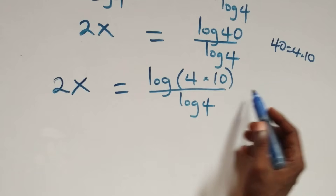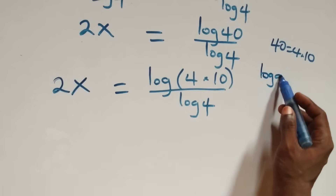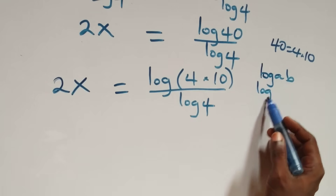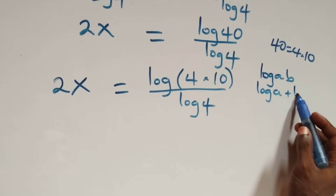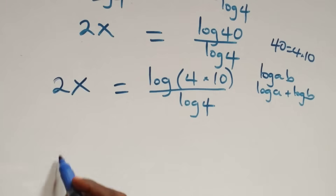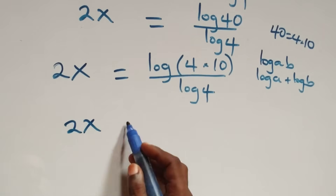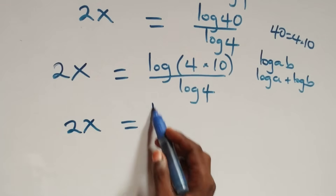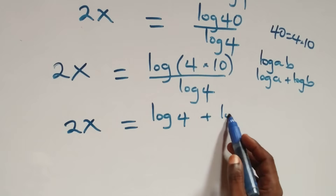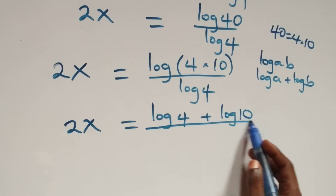This follows the law of logs: when we have log a times b, it is the same thing as log a plus log b. Then what we have now becomes two x equals to log four plus log ten, all over log four.